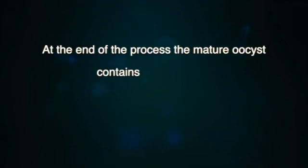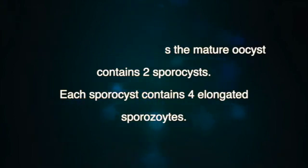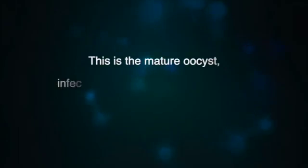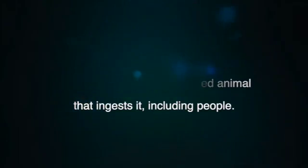At the end of the process, the mature oocyst contains two sporocysts. Each sporocyst contains four elongated sporozoites. This is the mature oocyst, infective for any warm-blooded animal that ingests it, including people.